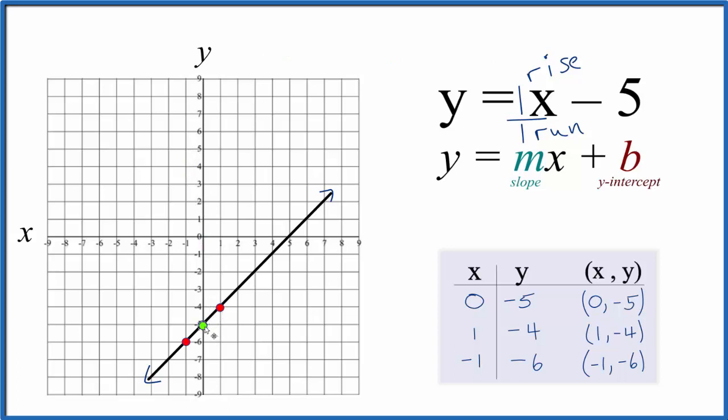Rise over run. So we go to the y-intercept. We go up 1 over 1. And there's our point. Up 1 over 1. And we can keep doing this. You can see each point up 1 over 1 is on our line.